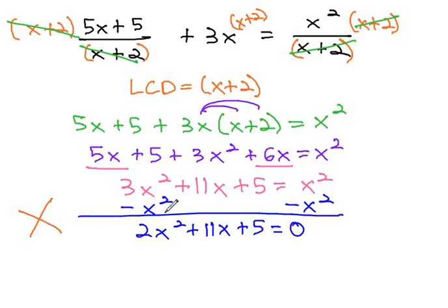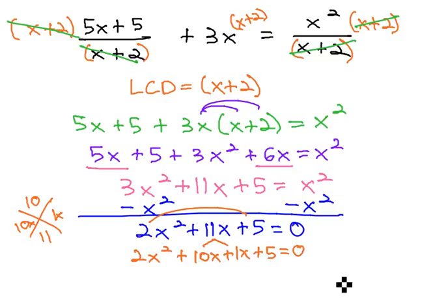We can factor this using the AC method, multiplying to 10 and adding to 11, which we can see we can do with 10 and 1. However, because there's a number in front of x², we're going to have to split the middle term into 10x and 1x. We now have 2x² + 10x + 1x + 5 = 0.